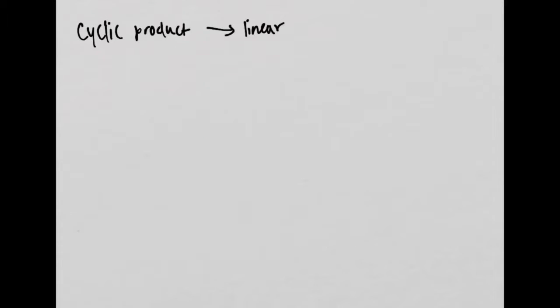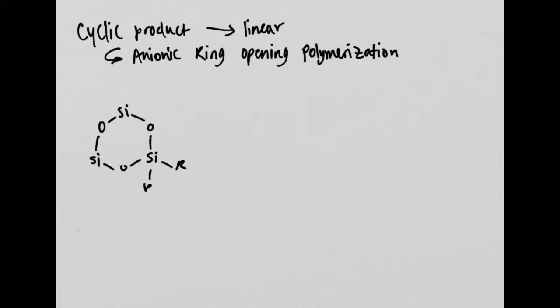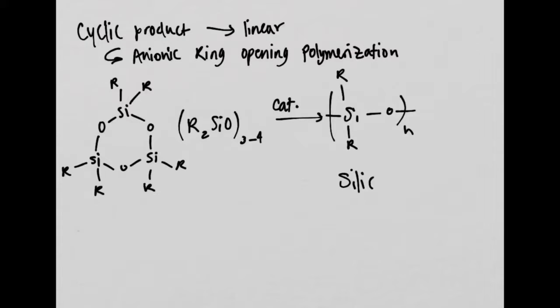Cyclic product of this reaction is then linearized into a chain of silicone by anionic ring opening polymerization using a catalyst. This reaction is shown below, and the catalysts that can be included in this reaction are molecules such as sodium hydroxide, potassium hydroxide, and sodium bicarbonate.